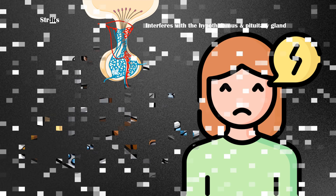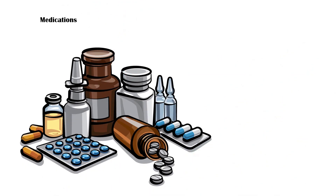Certain medications. Several classes of medications, including thyroid medications, epilepsy drugs, and steroids, can interfere with the physiological hormone secretion responsible for menstruation, leading to menstrual irregularities.